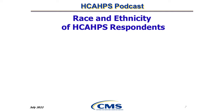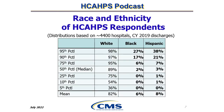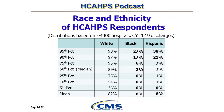This table shows the hospital distributions for race and ethnicity using data based on about 4,400 hospitals in calendar year 2019. The bolded categories are ones where HCAHPS and other survey response rates are typically lower. In the average hospital, 82% of patients are white, 6% are Black, 8% are Hispanic, and 4% are in the remaining racial and ethnic categories of American Indian or Alaska Native, Asian, Native Hawaiian or Pacific Islander, multiracial or other race category.